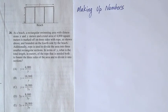and bounded on the fourth side by the beach. Additionally, rope is used to divide the area into three smaller rectangular sections. In terms of y, what is the total length in meters of the rope that is needed both to bound the three sides of the area and to divide it into sections?